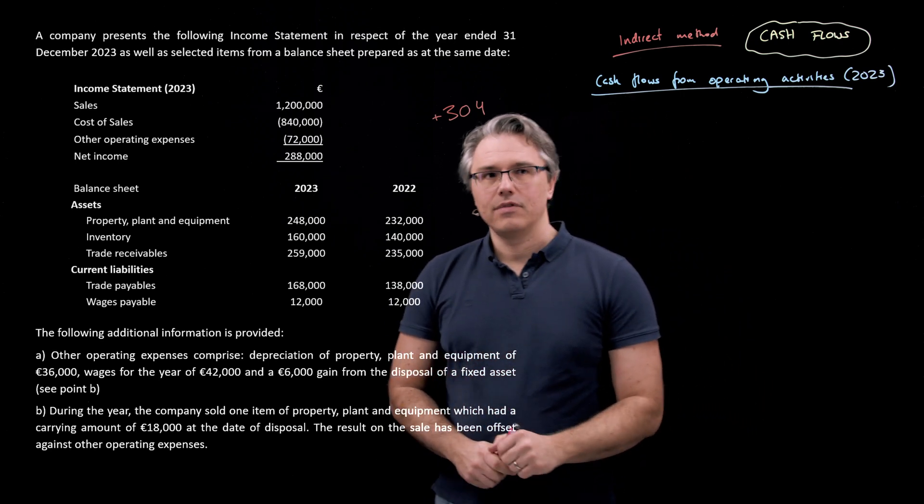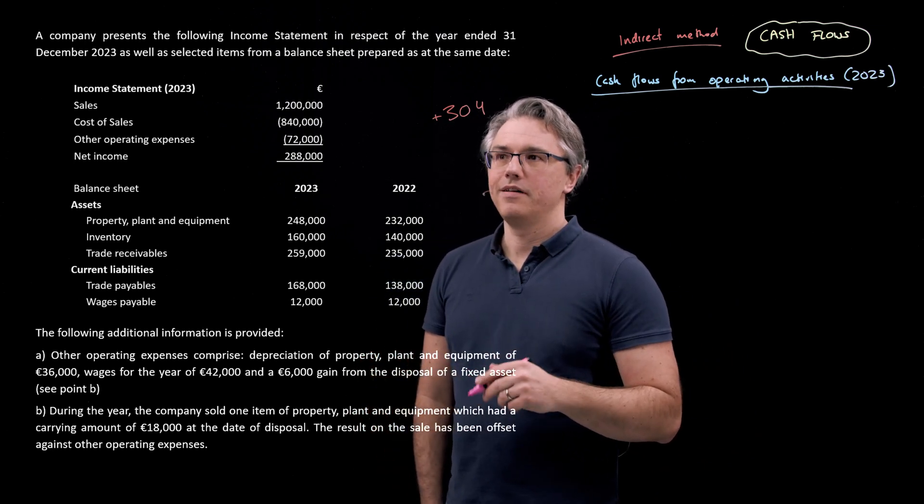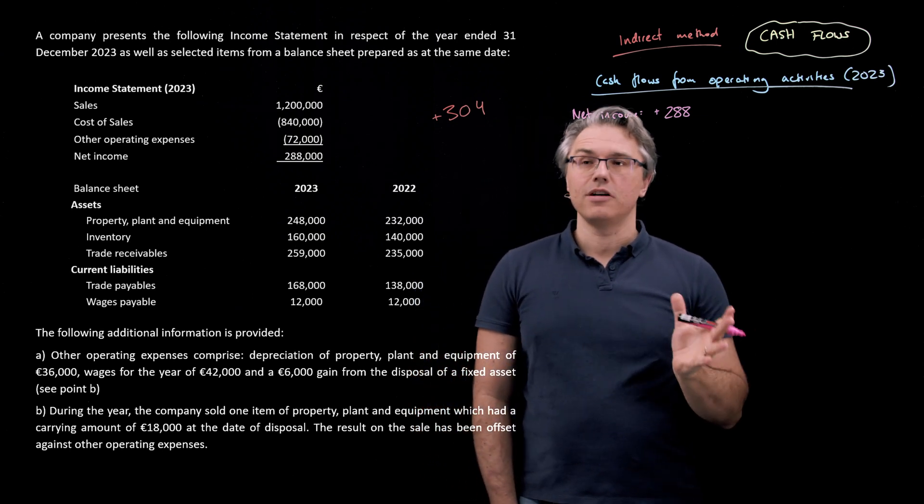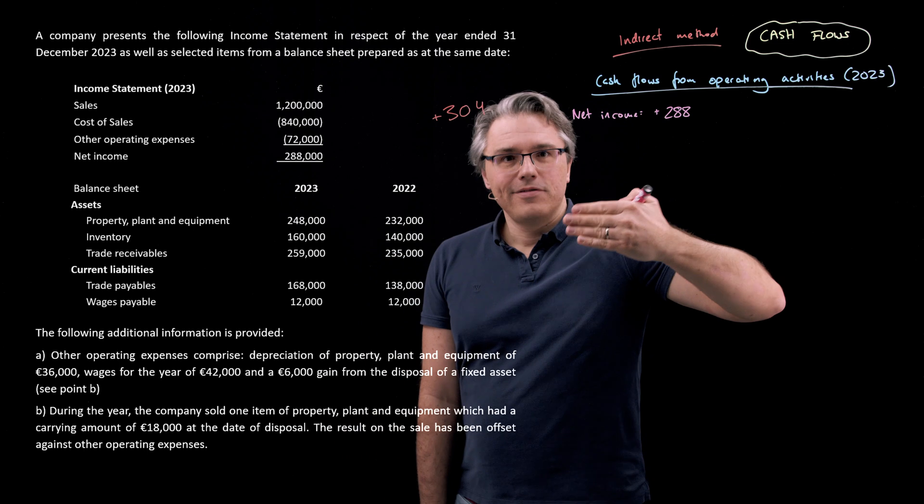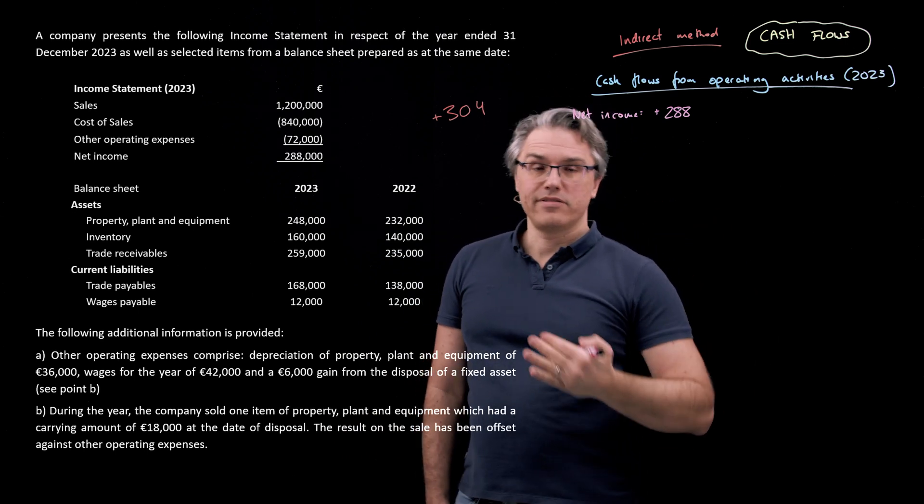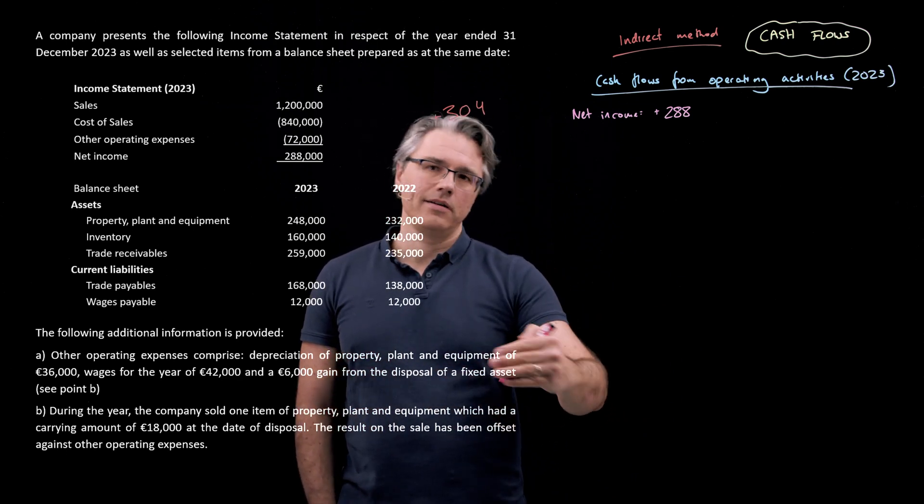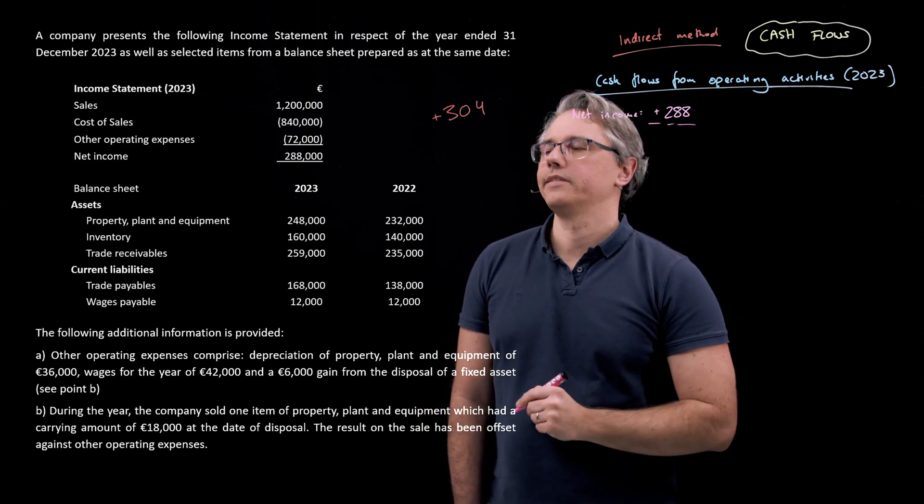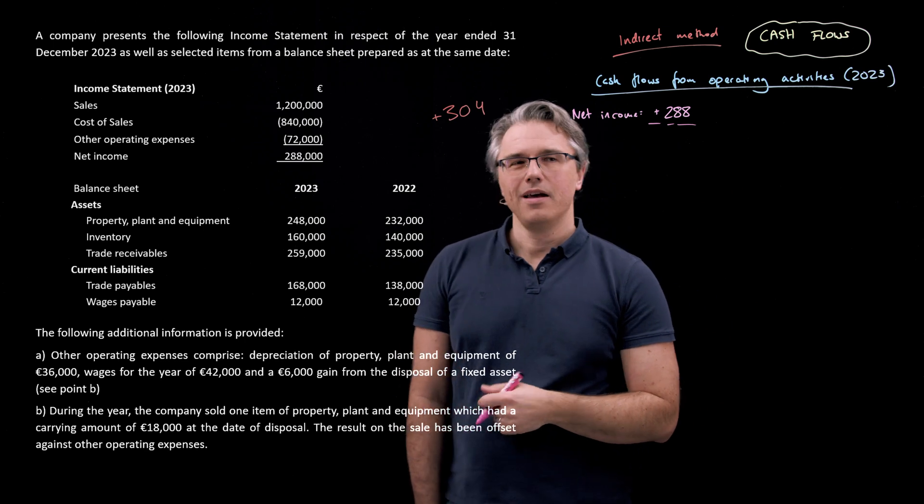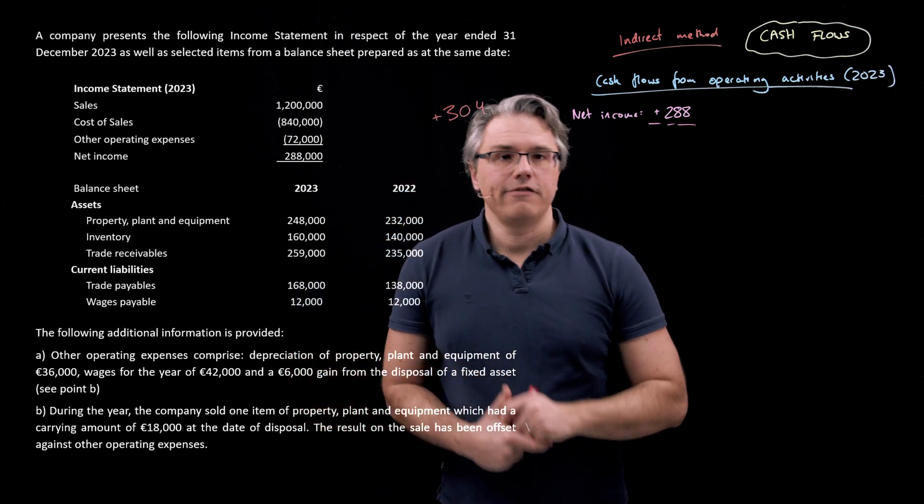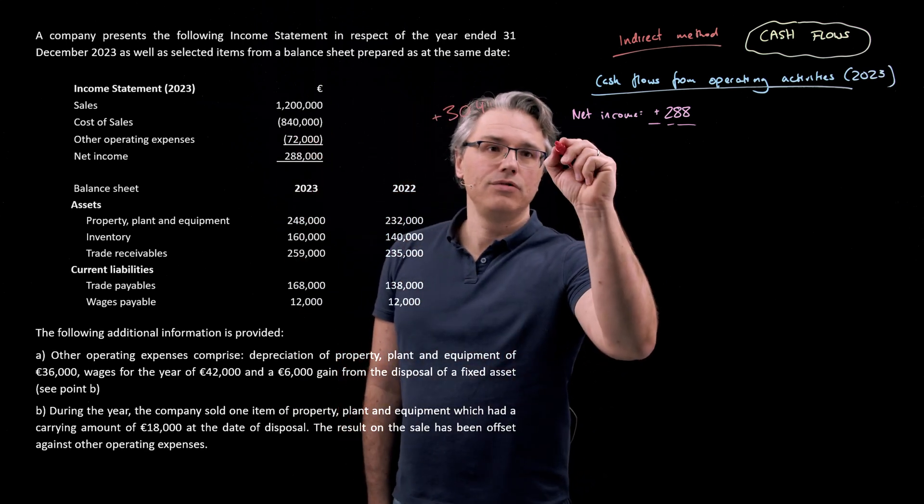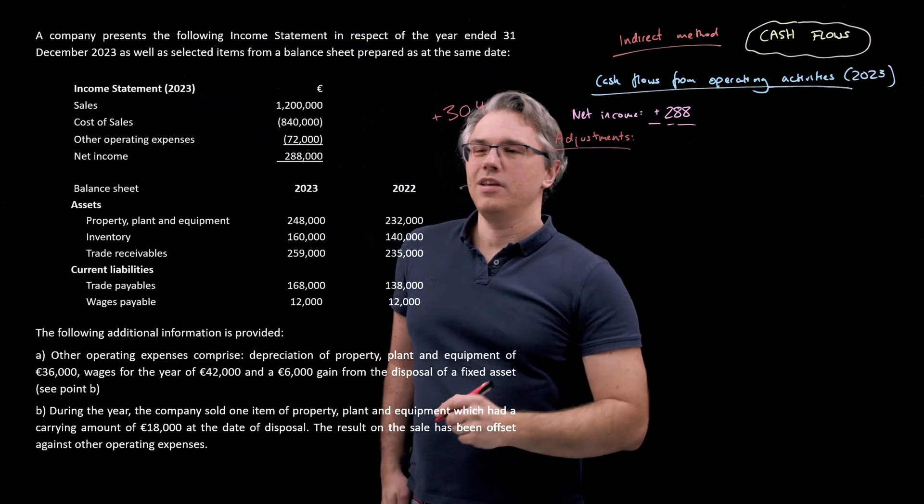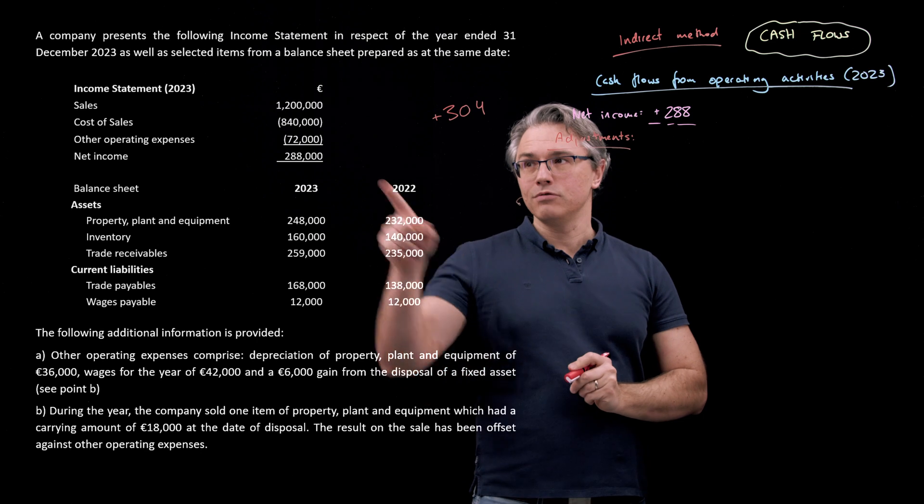The starting point with the indirect method is going to be our net income of plus 288,000. Recall that with the direct method we went through cash inflows from customers, then cash outflows to suppliers and employees, line by line. With the indirect method we're going to start with the accounting profit and make certain adjustments which will reflect the fact that many lines in the income statement do not necessarily correspond to cash flow coming in or going out.